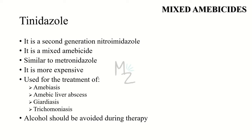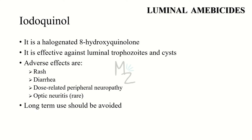The next mixed amebicide is tinidazole. It is a second-generation nitroimidazole, similar to metronidazole in spectrum of activity, absorption, adverse effects, and drug interactions. It is used for the treatment of amebiasis, amoebic liver abscess, giardiasis, and trichomoniasis. Tinidazole is as effective as metronidazole but is more expensive, and alcohol consumption should be avoided during its therapy.